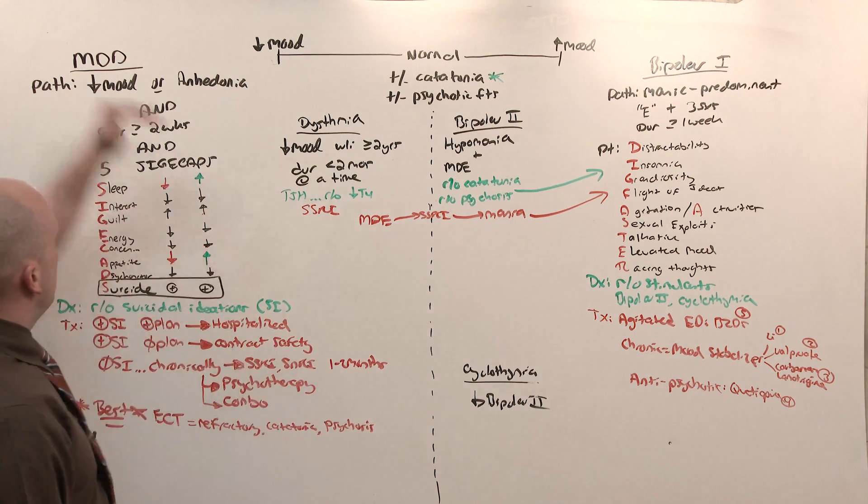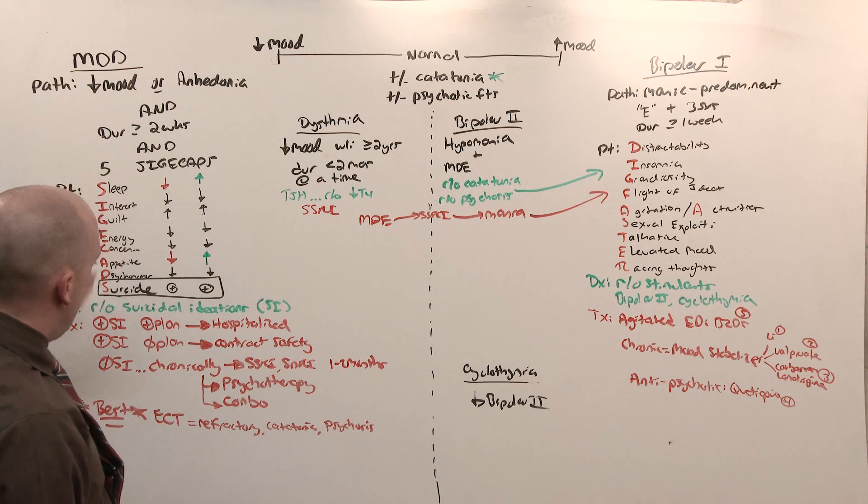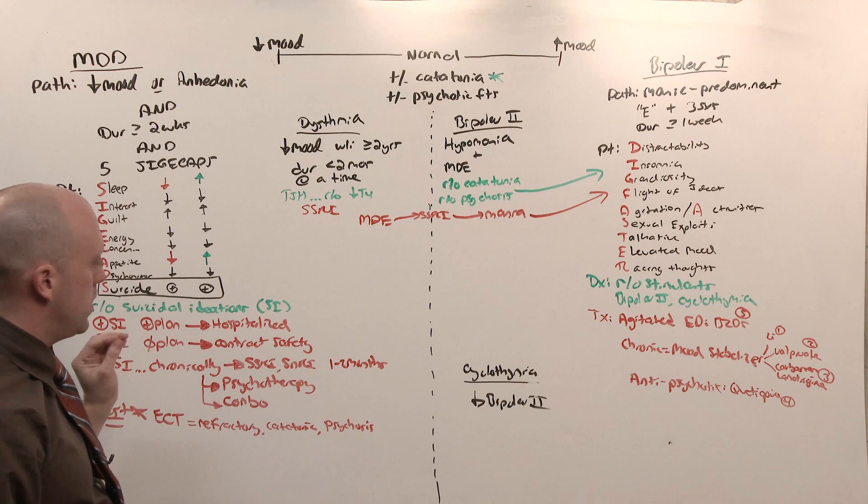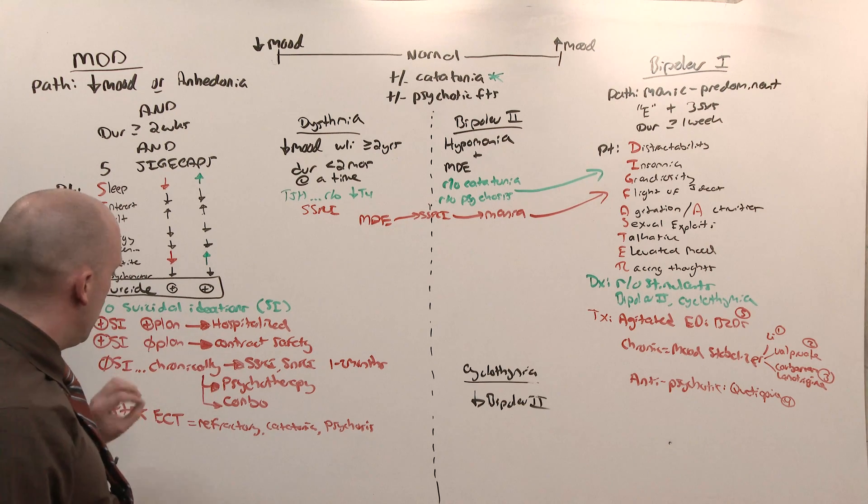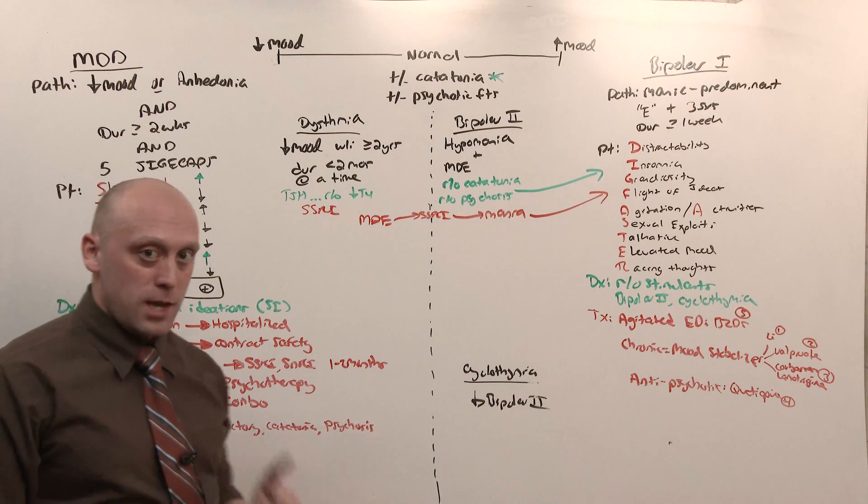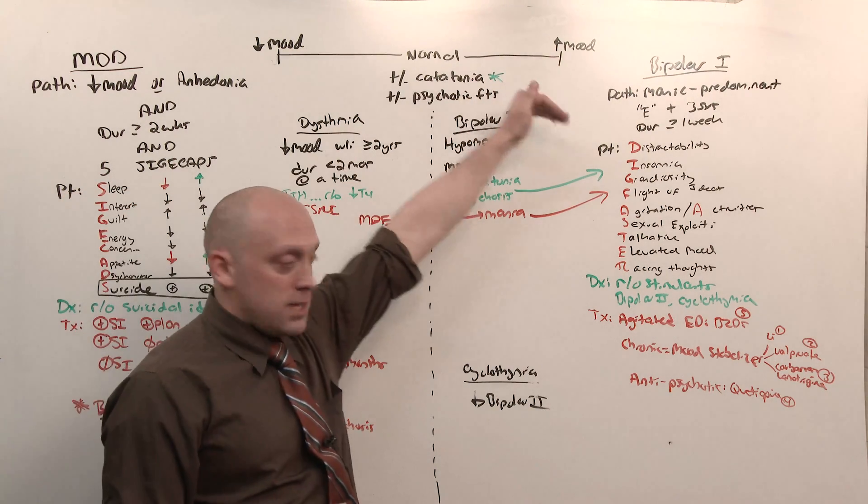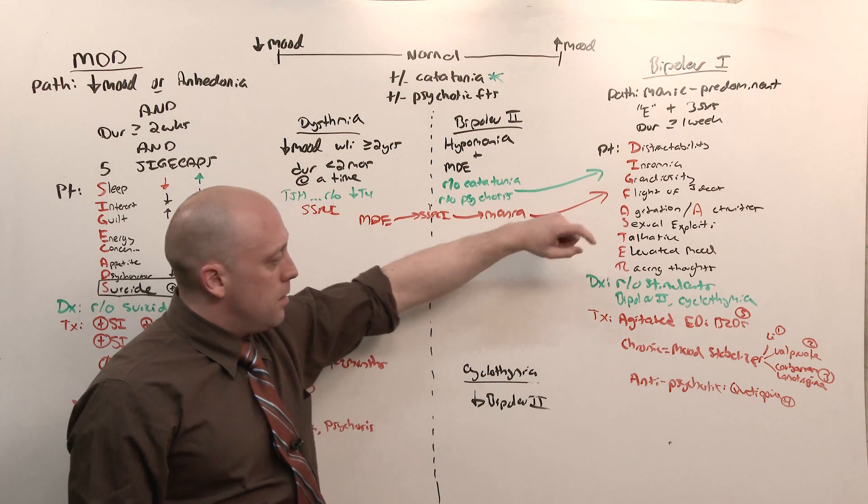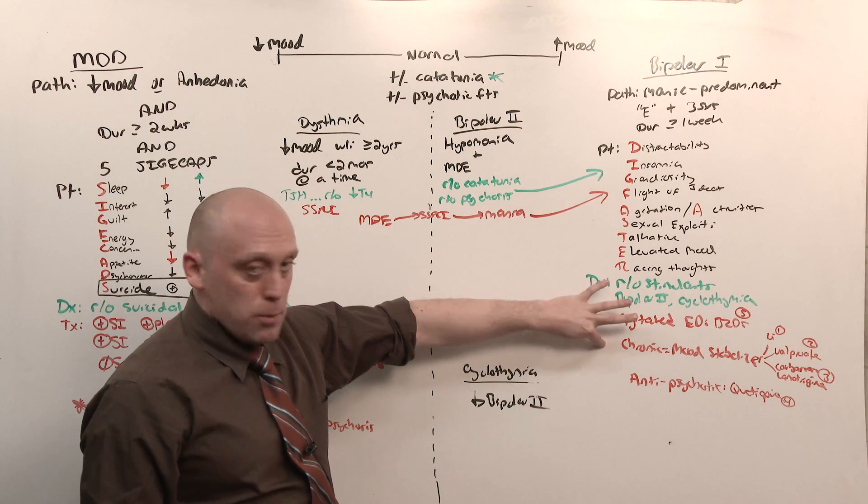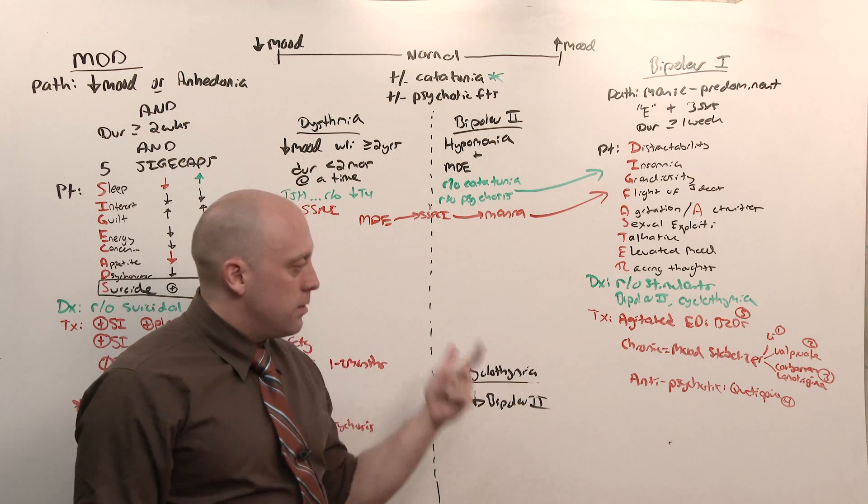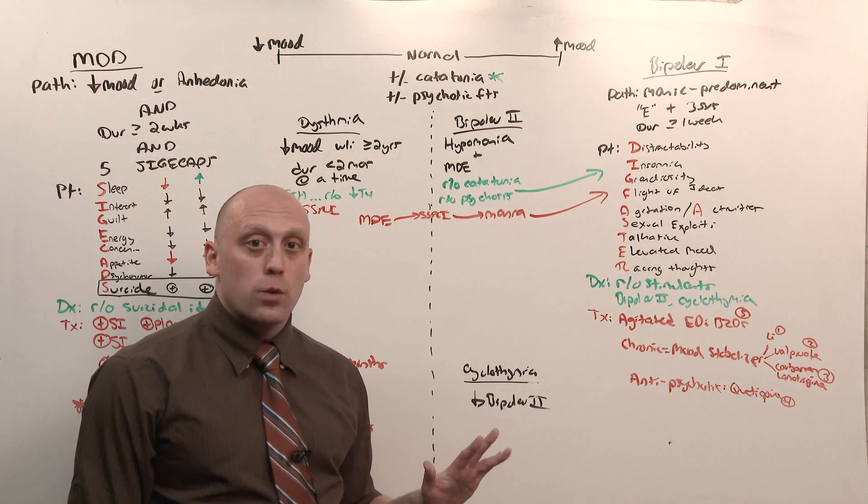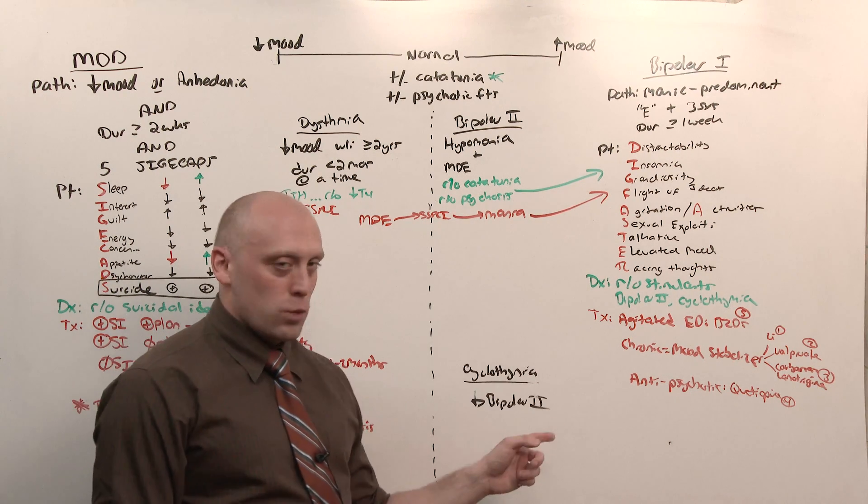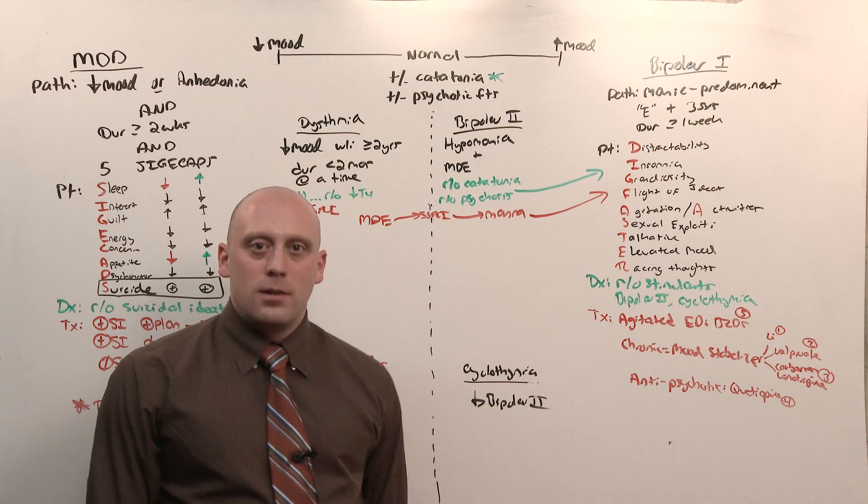Commit most of your time to major depressive disorder: SIGECAPS. Know what to do if there's suicidal ideations and a plan or not. SSRI is the right answer. Combo therapy is better. ECT is best. Be careful of the question they ask. Bipolar 1 is mania: DIGFAST. Need three of the symptoms. Rule out drugs like cocaine. Then choose a mood stabilizer: lithium, then valproate, then carbamazepine or lamotrigine. Know that quetiapine can always be the right answer, but probably isn't because one of the other ones are going to be there also. That is mood one.